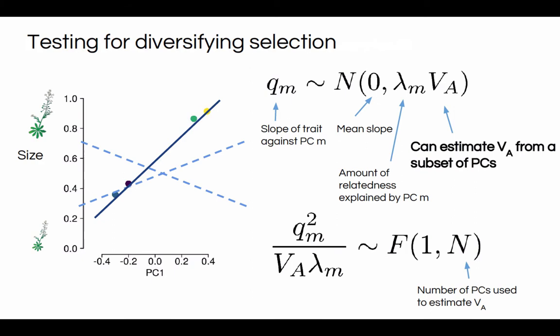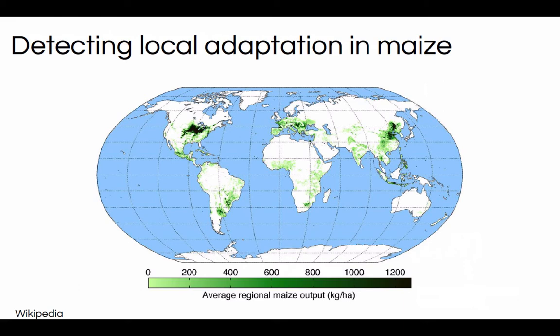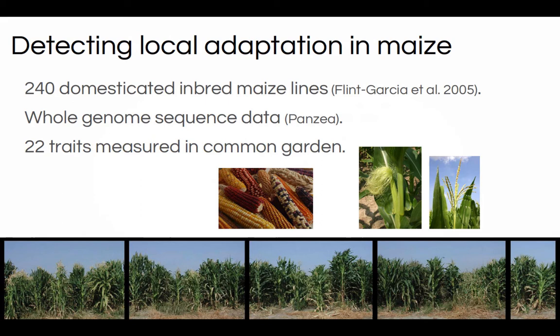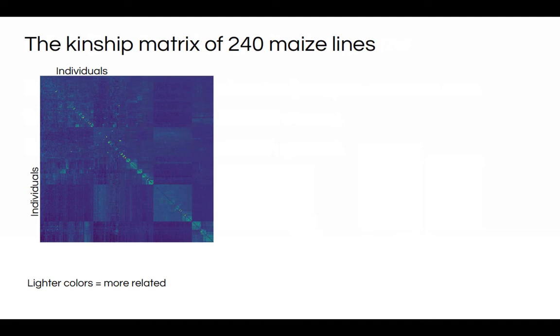Now that I've explained the test, I'll tell you about how we've been applying it to maize. Maize is a really cool system for thinking about local adaptation because it was domesticated in Mexico and has since spread all over the world — across North America, Europe, Asia, and Africa. As maize spread, it's had to adapt to a lot of new environments. I'm first going to tell you about an application of our test to 240 domesticated inbred maize lines, all from public breeding programs. We have whole genome sequence data for these individuals and 22 traits measured in a common garden. The kinship matrix of our maize populations is quite complex with no clear subpopulations.